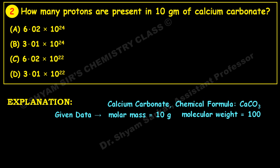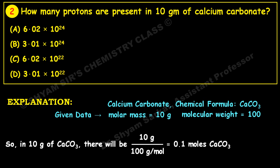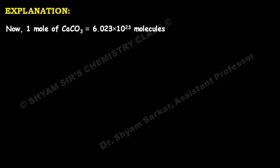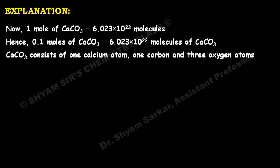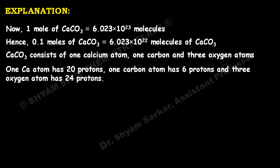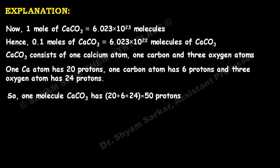First calculate moles: 10 ÷ 100 = 0.1 moles of calcium carbonate. One mole CaCO₃ equals 6.023 × 10²³ molecules, so 0.1 moles equals 6.023 × 10²² molecules. In CaCO₃ there is 1 calcium atom (20 protons), 1 carbon atom (6 protons), and 3 oxygen atoms (8 × 3 = 24 protons), giving a total of 50 protons per molecule.